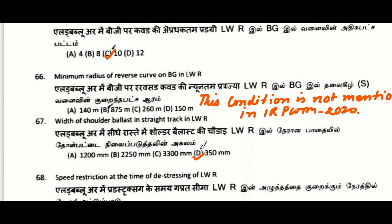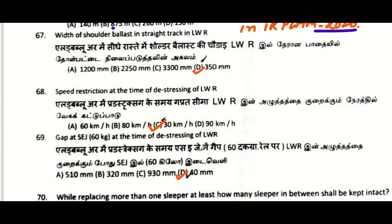Minimum radius of reverse curve on BG in LWR — this condition is not mentioned in IRPWM 2020. It was previously mentioned in earlier manuals but in the 2020 edition this condition has been removed. Previously it was given as 875 meters. Width of shoulder ballast in a straight track in LWR: 350 mm.